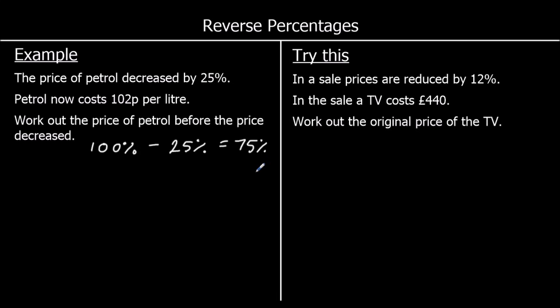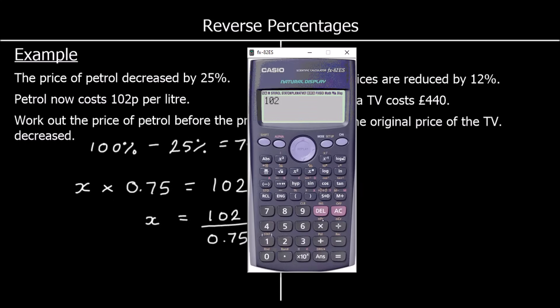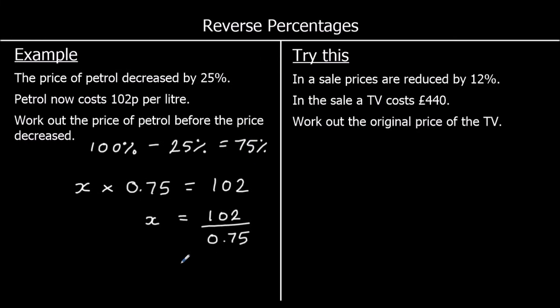So to work out 75% in one calculation, you get the original and you multiply it by 75% as a decimal, which is 0.75. So the original times 0.75 is 102. And to find the original, I divide both sides by 0.75. So 102 divided by 0.75. Type it into the calculator. And we've got 136.